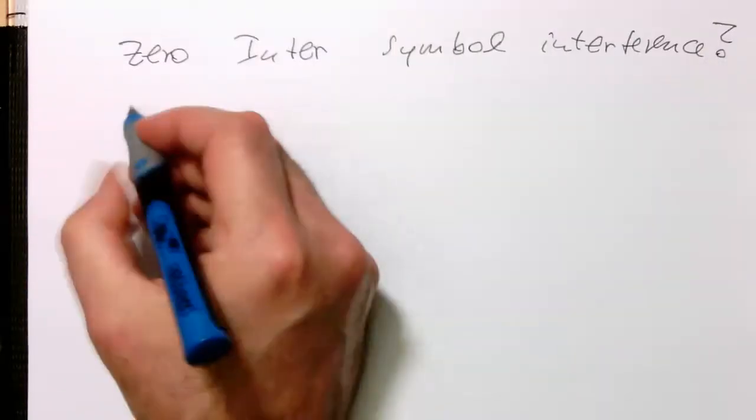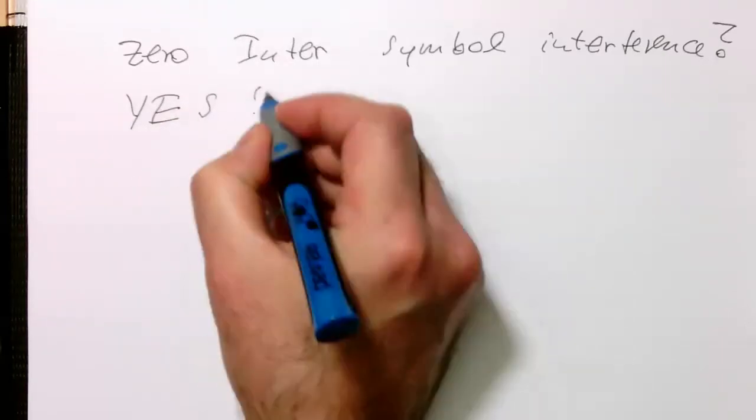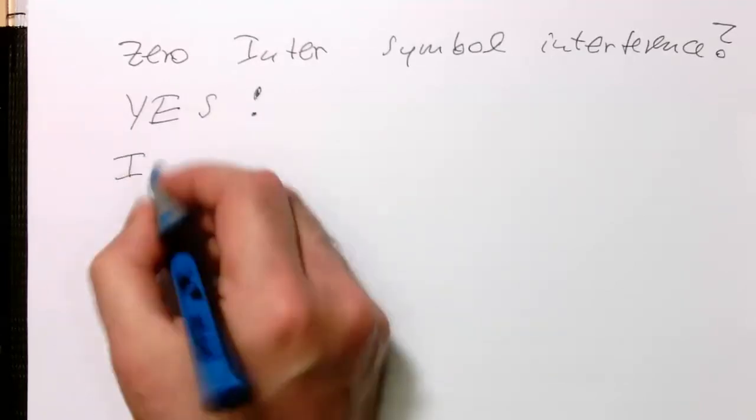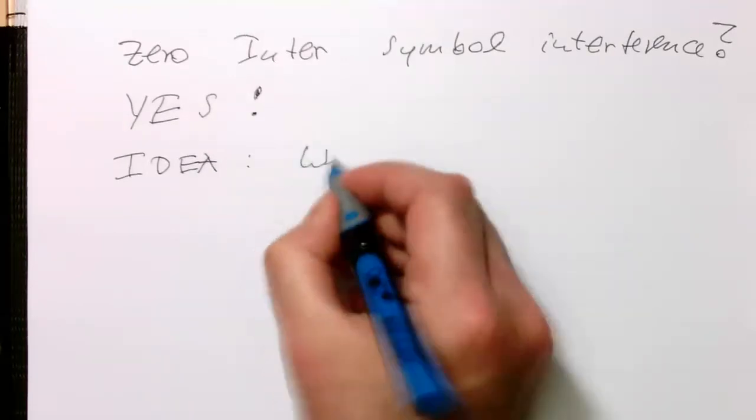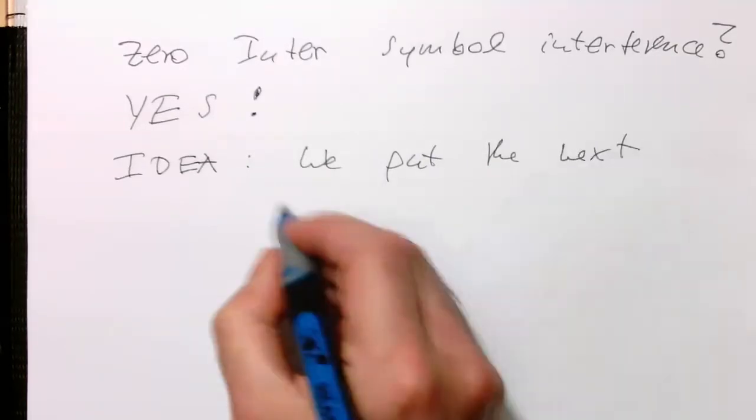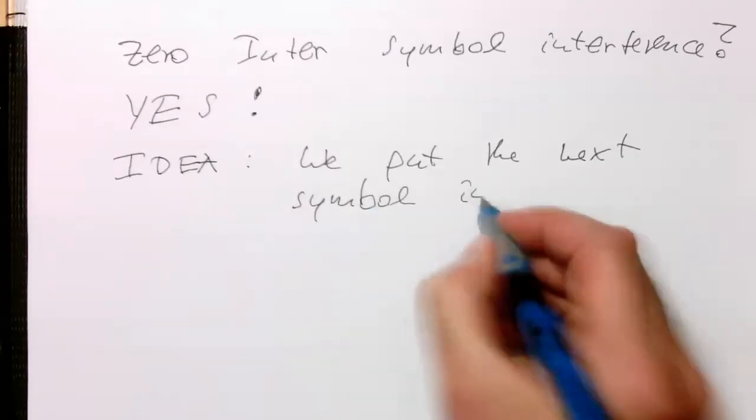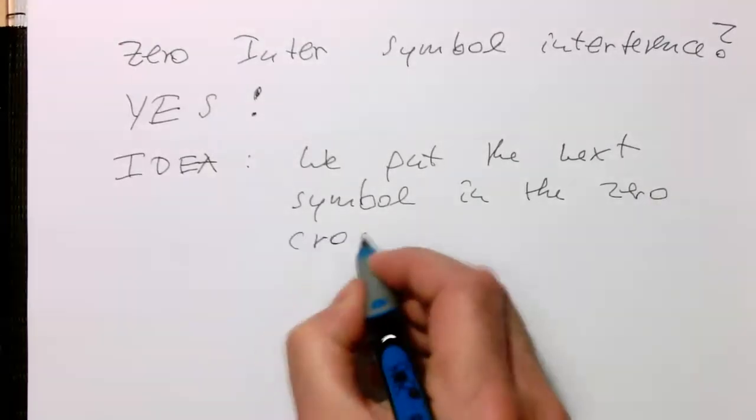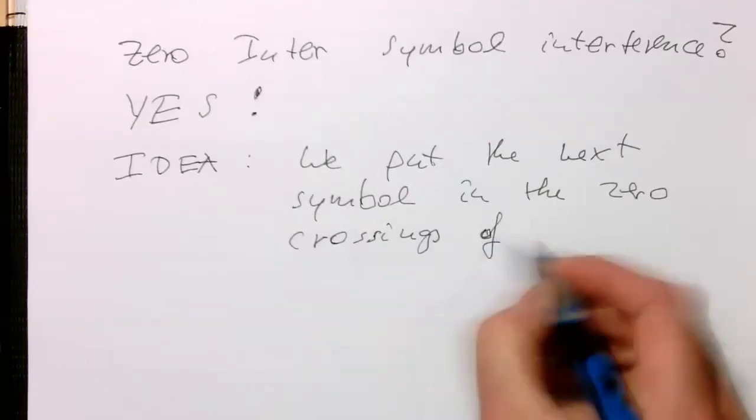The answer is yes, and the idea, the solution to this, is also very simple. We put the next symbol in the zero crossings of the sinc function.